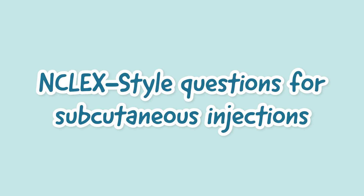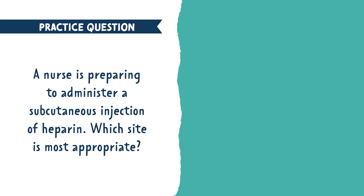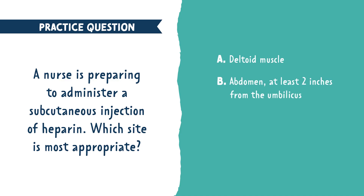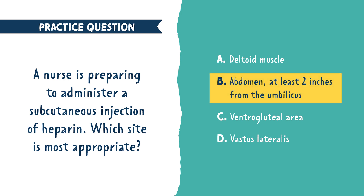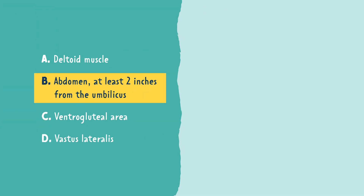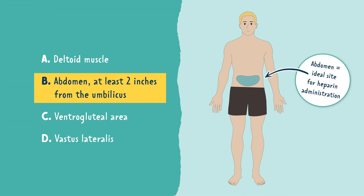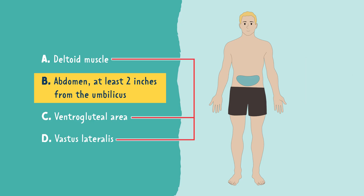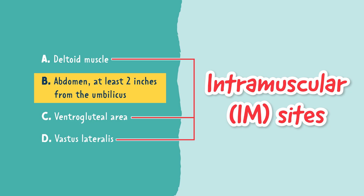Let's walk through some NCLEX style questions. A nurse is preparing to administer a subcutaneous injection of heparin — which site is most appropriate? A. The deltoid muscle. B. The abdomen, at least 2 inches from the umbilicus. C. The ventrogluteal area. D. The vastus lateralis. The correct answer is B, the abdomen, at least 2 inches away from the umbilicus. Heparin is absorbed best in the subcutaneous fat of the abdomen, making it the ideal site. The other options are all used for intramuscular injections, not subcutaneous.